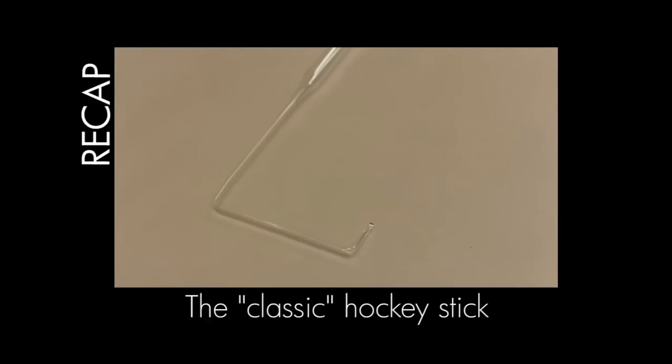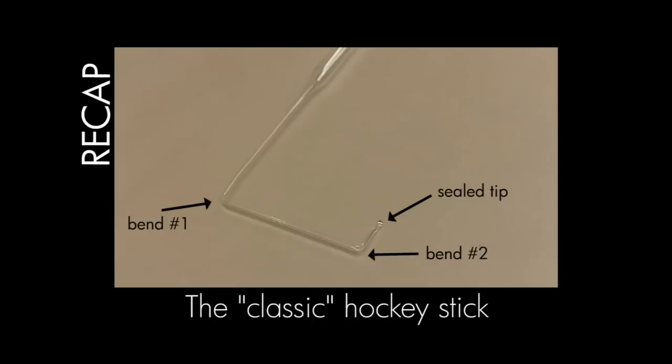This is the basic hockey stick. It involves making two quick corners and sealing the tip. This will work for spreading cells around any agar plate.